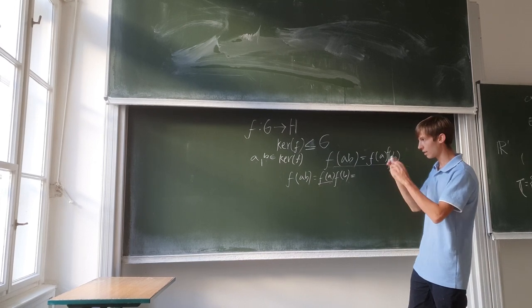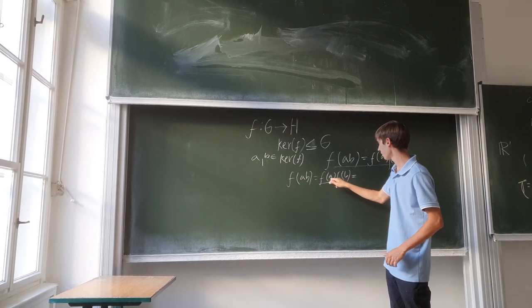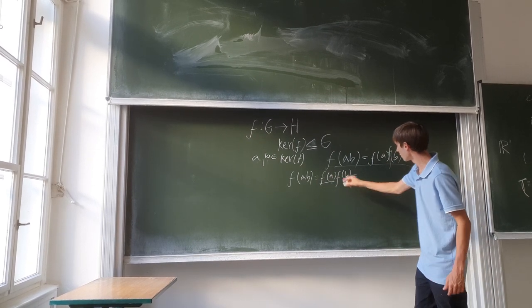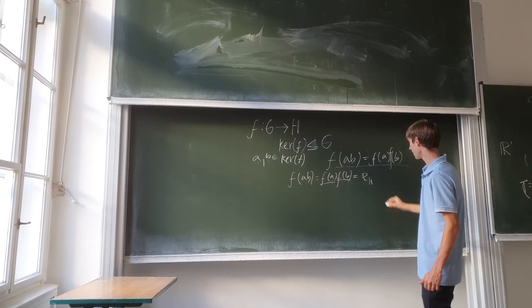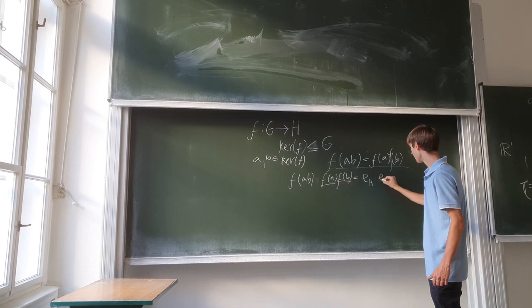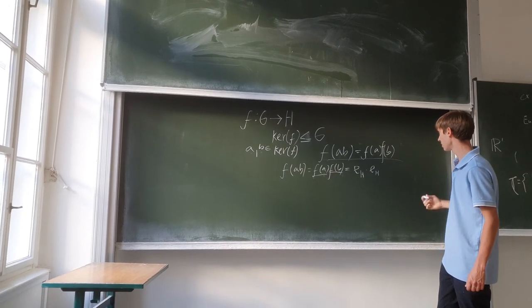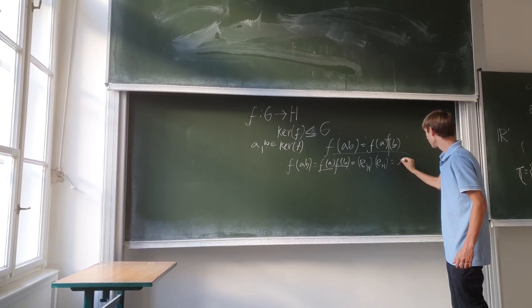So what we have here is that f(a) after the operation must equal the identity in H. Let me denote the identity in H as e_h. This is e_h times e_h again.